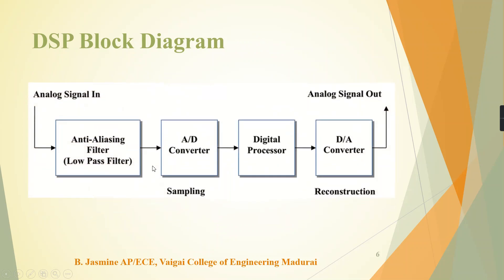What is the block diagram used for digital signal processing? An analog signal is used as input and fed into an anti-aliasing filter, which is a low-pass filter. It eliminates unwanted high frequencies. The output of the low-pass filter is given to an analog-to-digital converter. The conversion of analog to digital is done through sampling, which is a key concept of digital signal processing. The digital signal is then given to a digital processor where processing is done, and after that the digital signal is converted back into an analog signal for output.